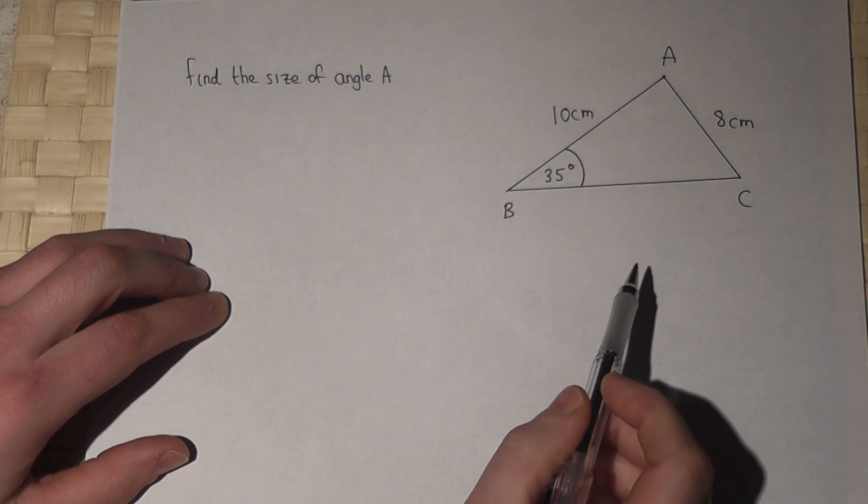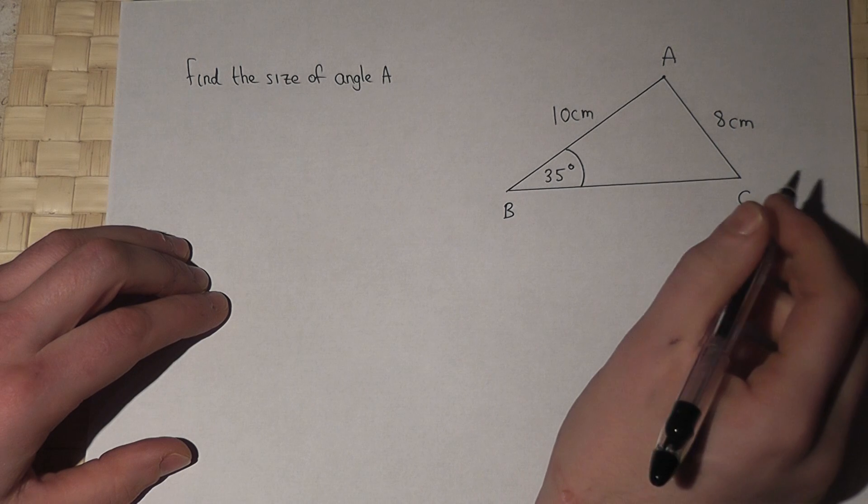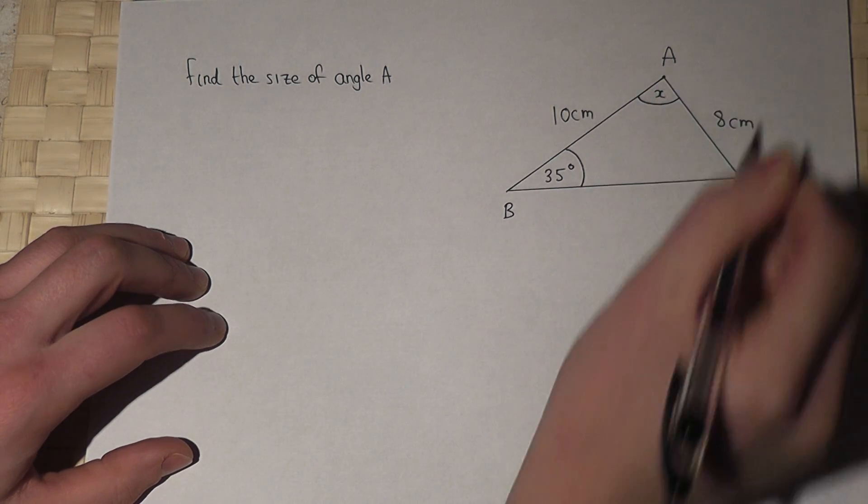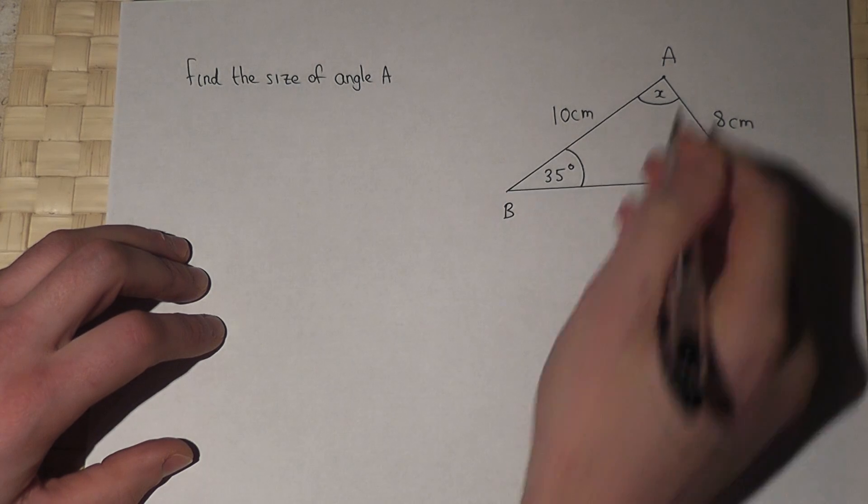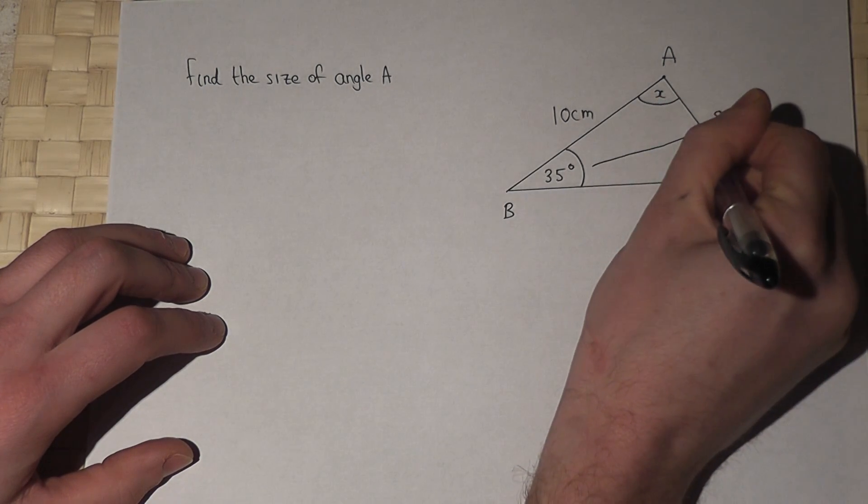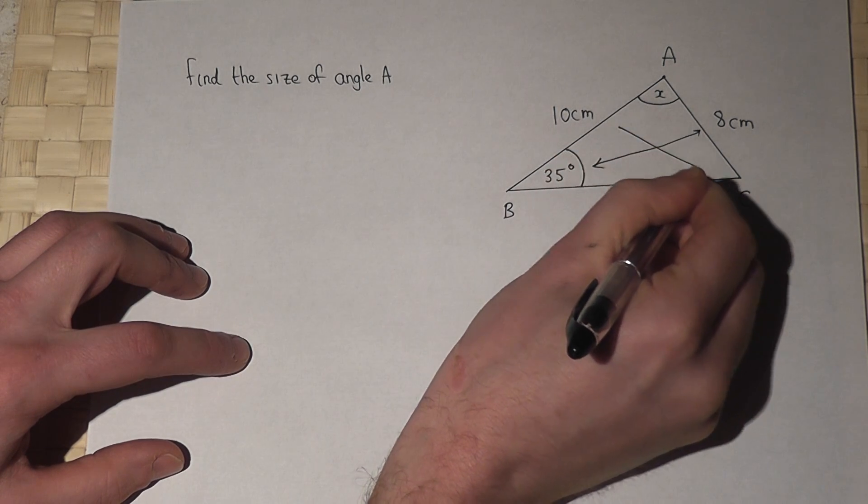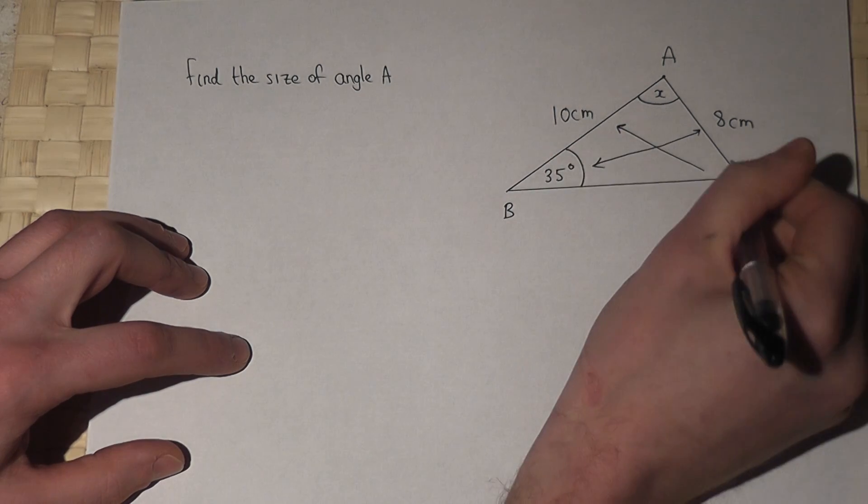In this question we're asked to find angle A, which I'll label as an X. Now then, if I pair off the 8 and the 35 degrees, the 10 pairs off with the angle down here, which I'll call Y.